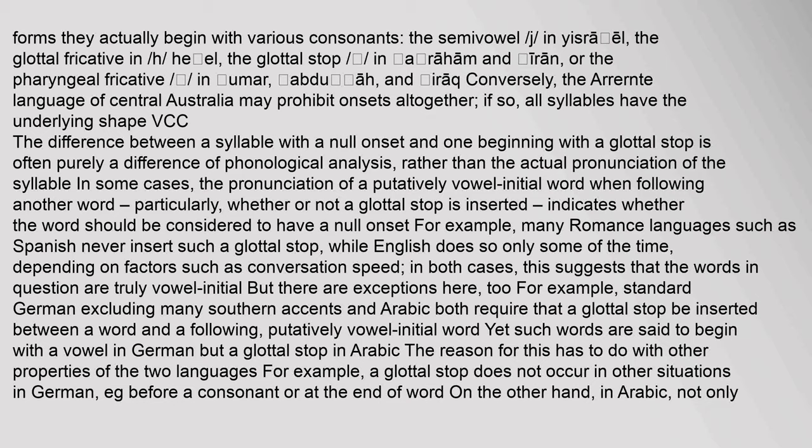Conversely, the Arrernte language of Central Australia may prohibit onsets altogether — if so, all syllables have the underlying shape VCC. The difference between a syllable with a null onset and one beginning with a glottal stop is often purely a difference of phonological analysis rather than actual pronunciation. The pronunciation of a putatively vowel-initial word when following another word — particularly whether or not a glottal stop is inserted — indicates whether the word should be considered to have a null onset. Many Romance languages such as Spanish never insert such a glottal stop, while English does so only some of the time.